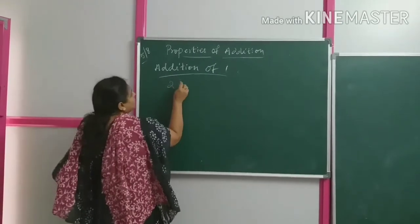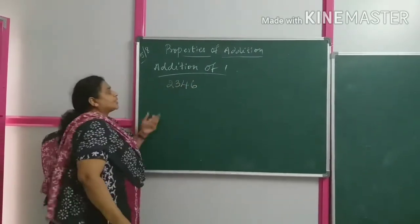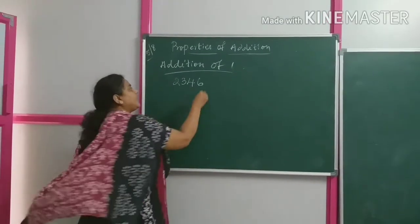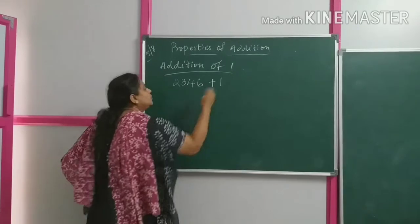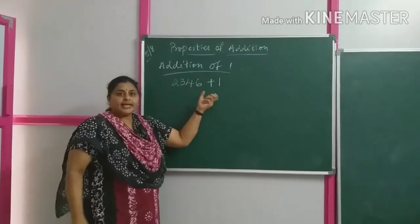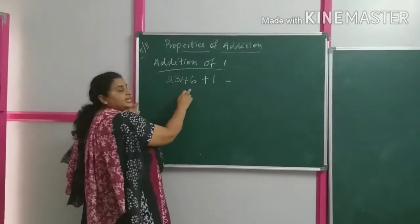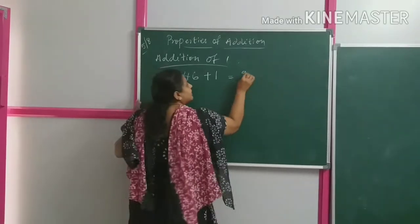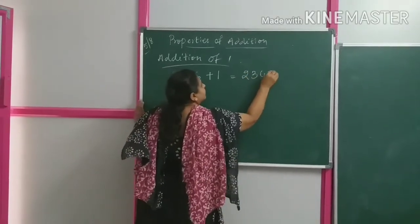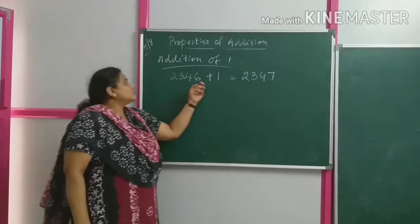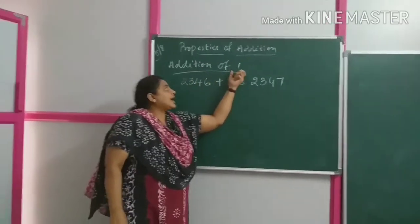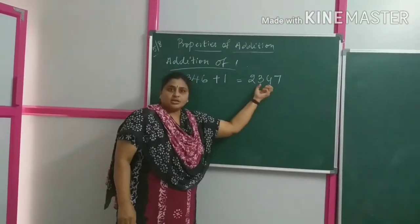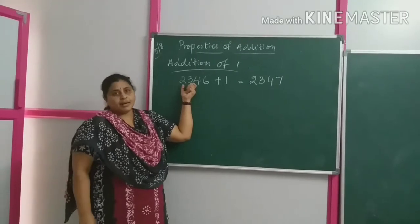Suppose I have 2346. If I add one to 2346, what do I get? I get the successor — that is the number that comes after. What is the number that comes after 2346? It is 2347. So the property of addition of one: when you add one to any number, you get the successor of the given number.